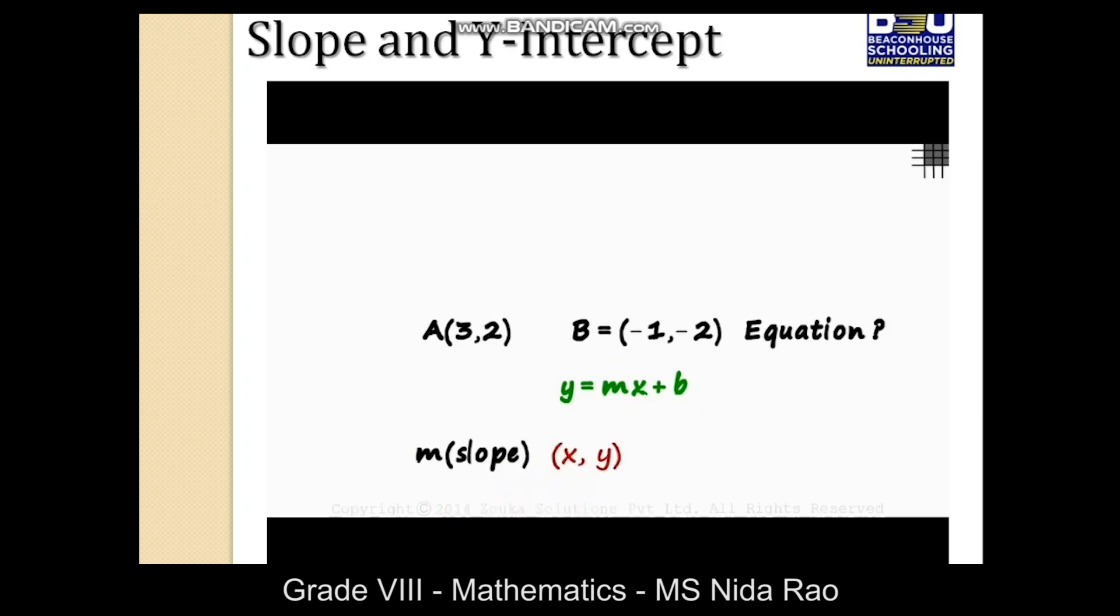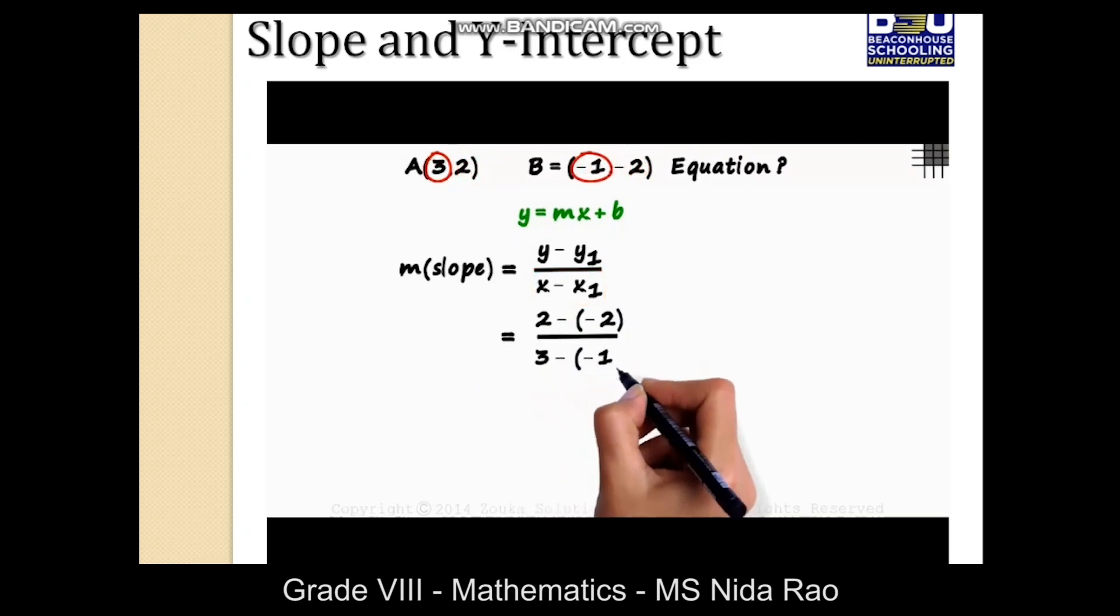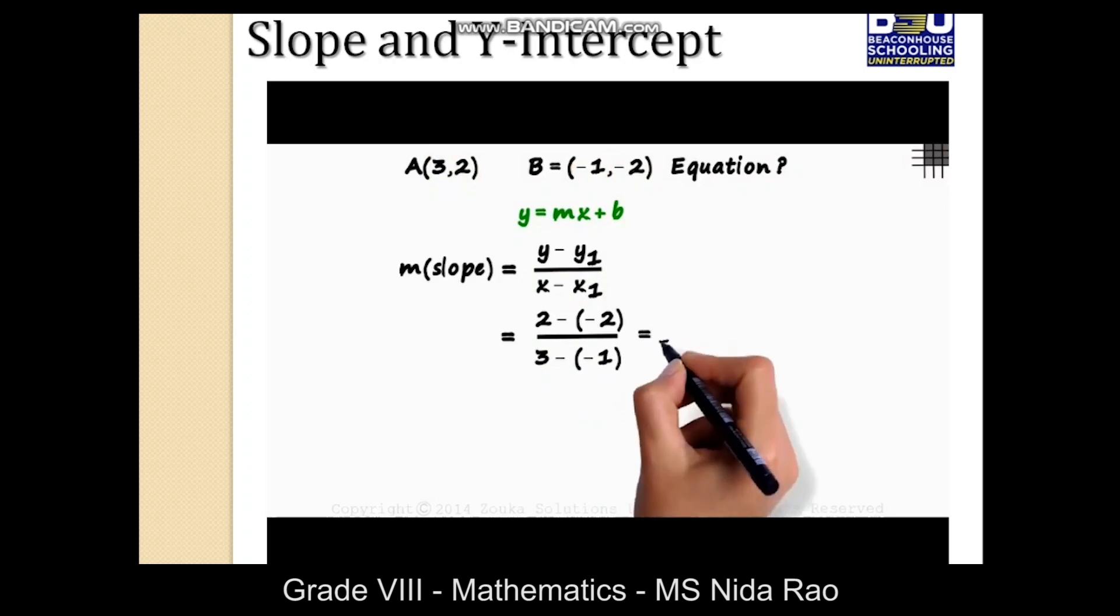If x comma y and x1 comma y1 are the coordinates of the two points, then the slope will equal y minus y1 over x minus x1. We have the coordinates of the two points here. If we assume A to be x comma y and B to be x1 comma y1, then the numerator would be 2 minus minus 2 and the denominator 3 minus minus 1. This gives us the slope of the line as 1.